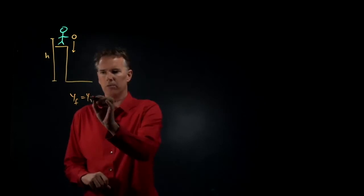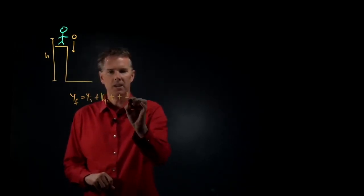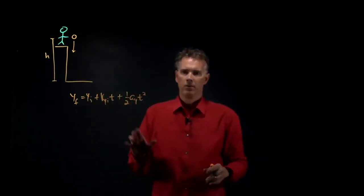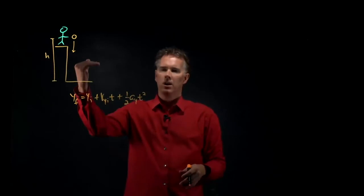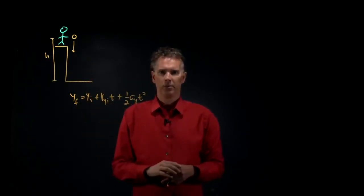y_final equals y_initial plus v_y_initial times t plus one half a_y t squared. This is a great equation to understand the position y as a function of time given these other variables.